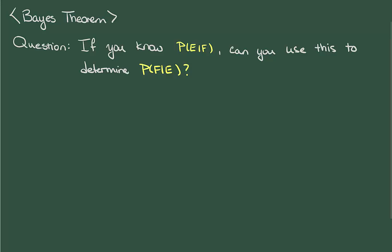There are examples when we can experimentally know the probability of E given F, but in practice we need to reverse this and determine the probability of F given E. The way that we do this turns out to be relatively simple.